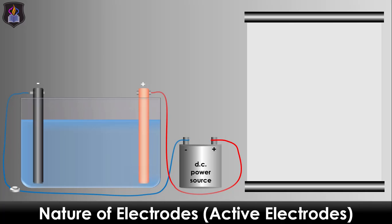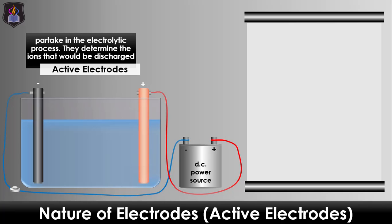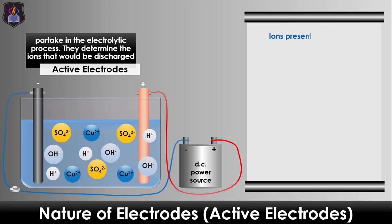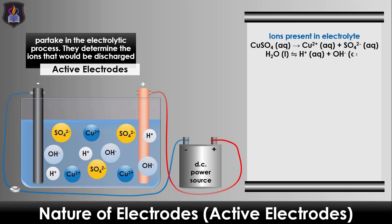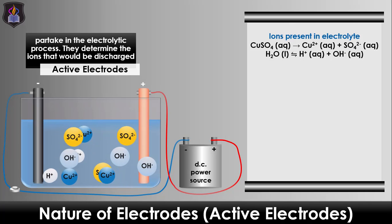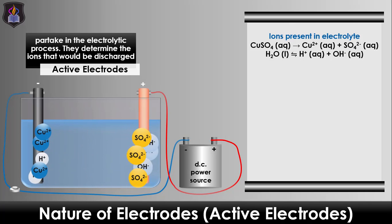An active electrode is an electrode that participates in and influences the ions that can be discharged. Examples are a copper anode in copper(II) salt solution and a silver anode in silver salt solution. Let's use the electrolysis of aqueous copper(II) sulfate solution using a copper anode as the case study. Our emphasis is on the anode, because the cathode does not influence electrolytic reactions since reduction occurs there.